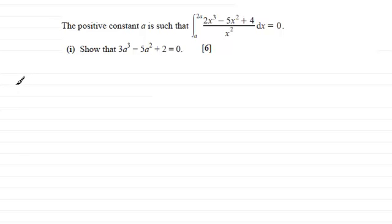So let's have a look then at this first part. So we've got the question, let's just copy the question out actually. We've got the integral then going from a to 2a of all of 2x cubed minus 5x squared plus 4 and this is all divided by x squared and we're integrating with respect to x and it equals 0.